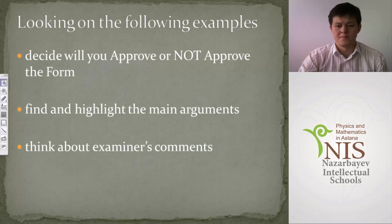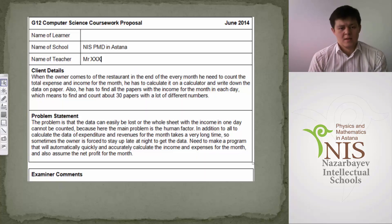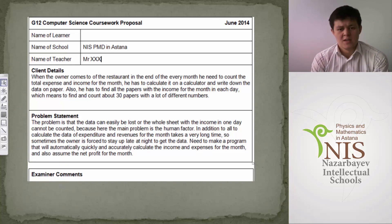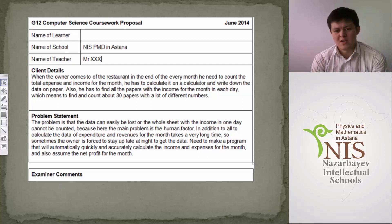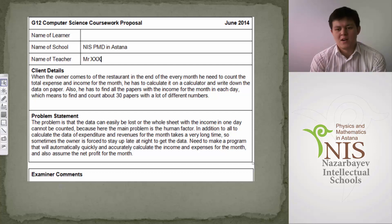Let's look at the first example — a student from 2014, school in Asana. Client details: when the owner comes to the restaurant at the end of every month, he needs to count the total expenses and income for the month. He has to calculate it on a calculator and write down the data on paper, and find all papers with income for the month — about 30 papers with a lot of different numbers.